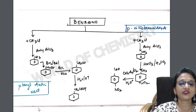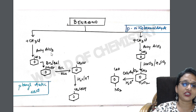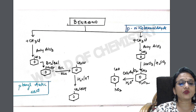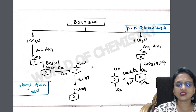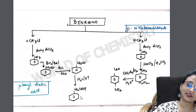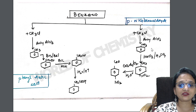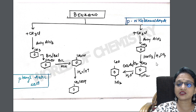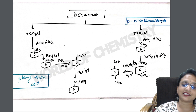Benzene to phenylacetic acid and benzene to paranitrobenzaldehyde: do Friedel-Crafts alkylation in both cases. For phenylacetic acid, add bromine — bromine attacks the para position of toluene, then do nucleophilic substitution to get cyanobenzene (benzyl cyanide), and on hydrolysis you get phenylacetic acid — the CH2 group remains and the cyano group gives the acid. For paranitrobenzaldehyde, do alkylation, introduce the nitro group via nitrating mixture to the para position, then use chromyl chloride in carbon disulfide to convert the methyl group to an aldehyde.